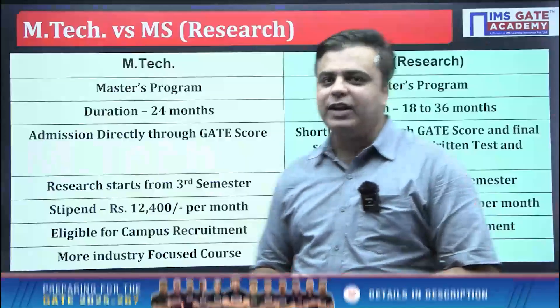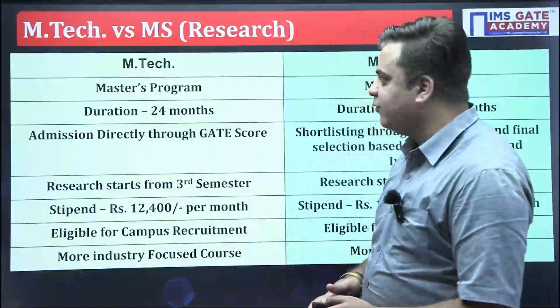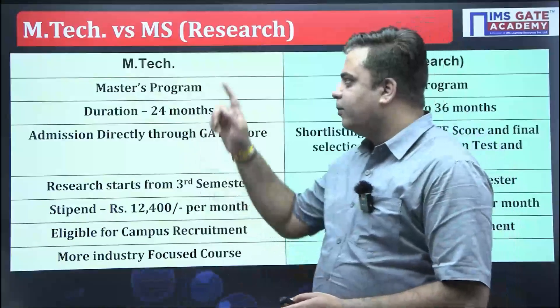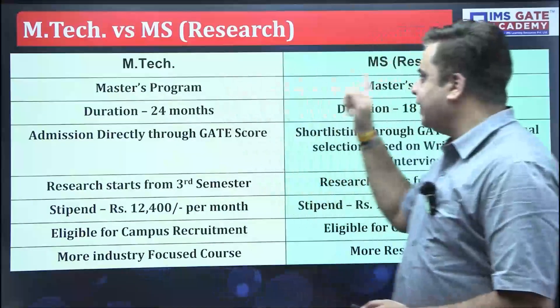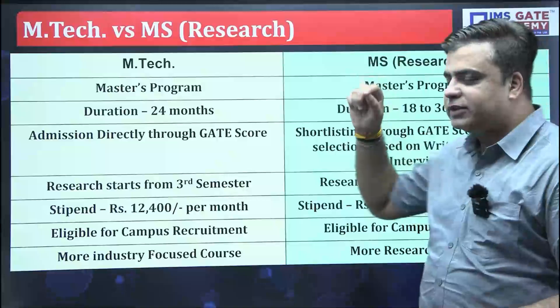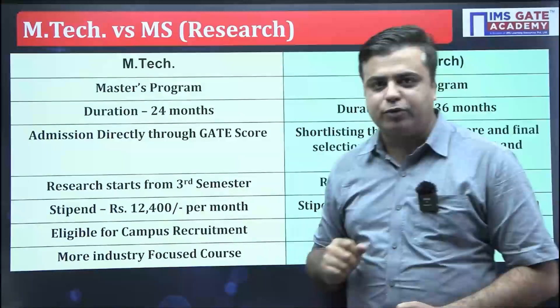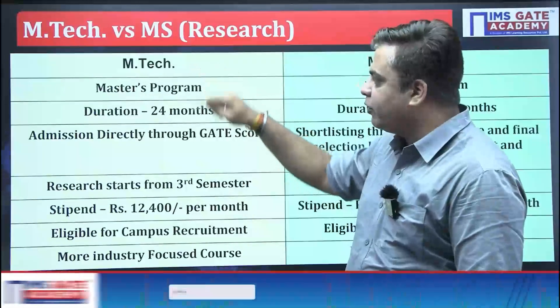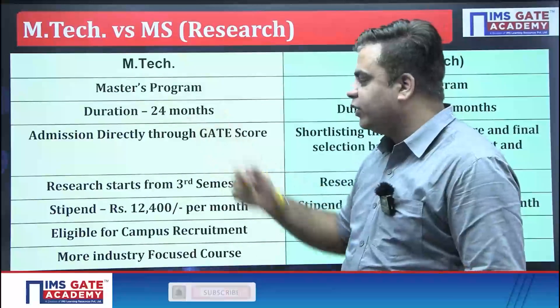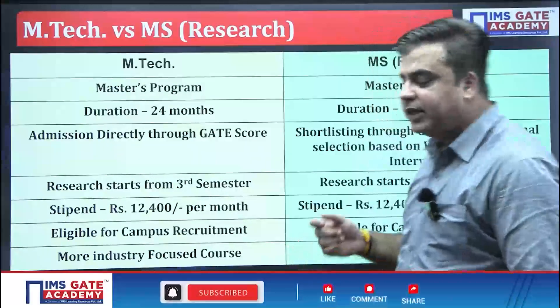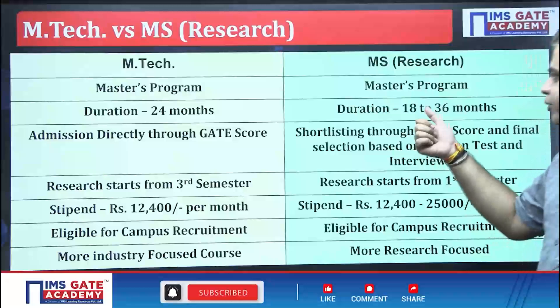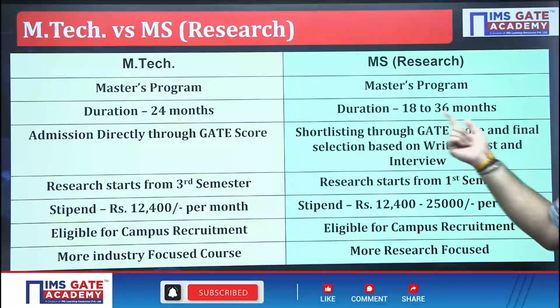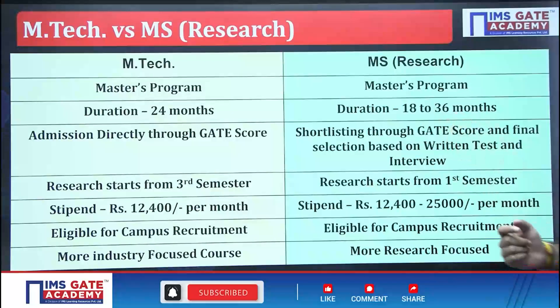So let's discuss one by one. First of all, both M.Tech and MS programs are master programs. The M.Tech program duration is 24 months, while the MS program duration varies from 18 to 36 months.